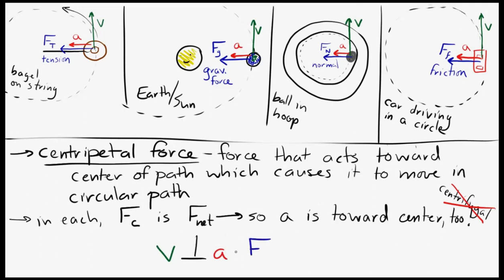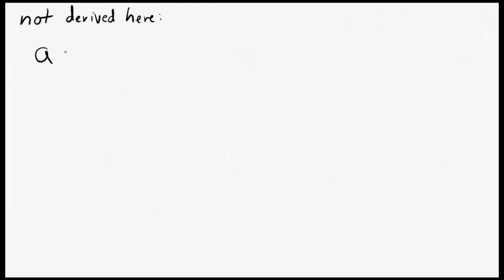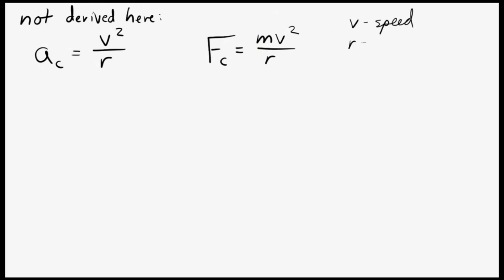Now I'm going to take a break from the diagrams and look at some equations you can apply. The centripetal acceleration is equal to v squared over r, and the centripetal force is equal to mv squared over r. In both equations, v represents speed — technically instantaneous speed, the speed at one single moment. And r is the radius of the circular path.